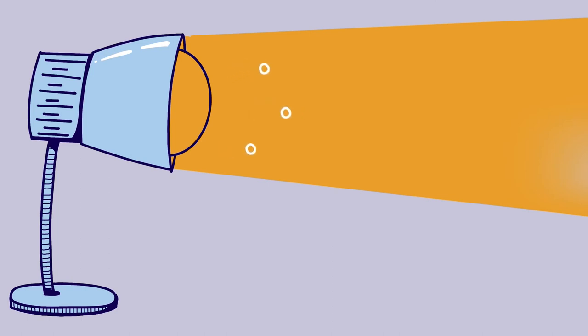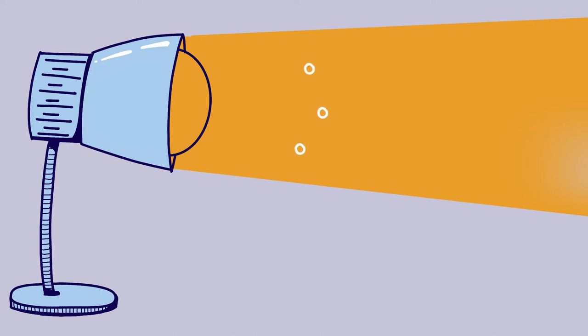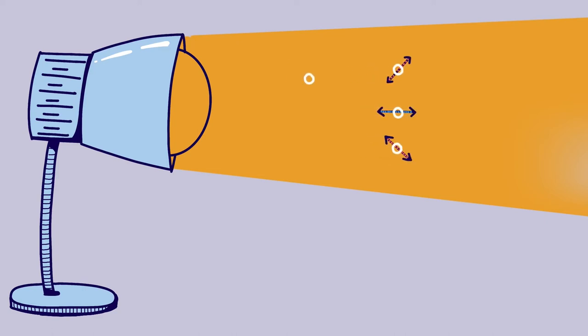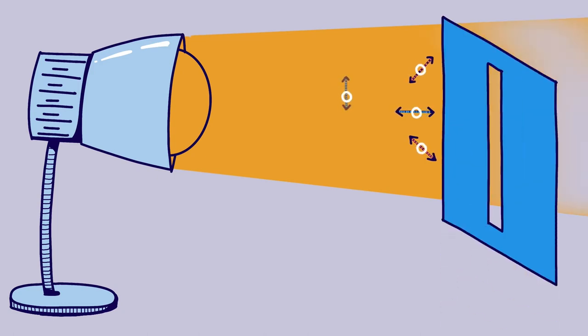To do this, Alice sends photons — the smallest part of light — to Bob. Since photons are not only particles but also waves, they oscillate. They can oscillate in different directions. But when they oscillate in only one direction, they are called polarized.